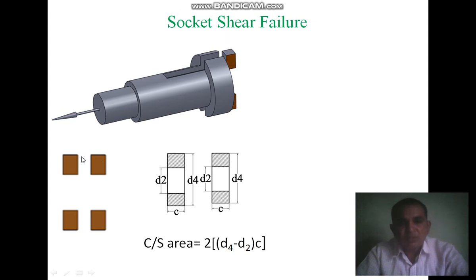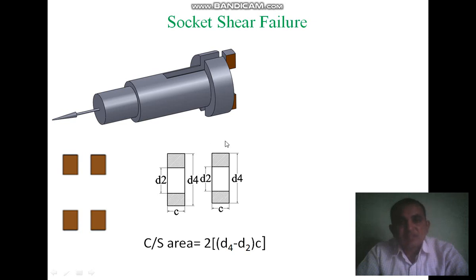Our aim is to find out the area where failure occurs. Here D2 is the diameter of the spigot, D4 is the diameter of the socket collar, and C is the clearance of the socket collar as well as the thickness of the socket collar.